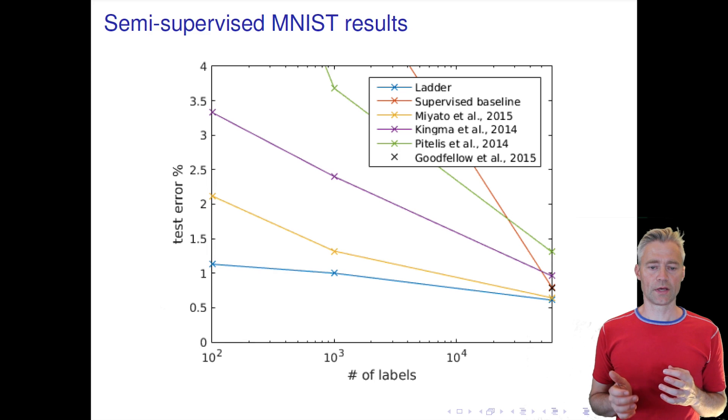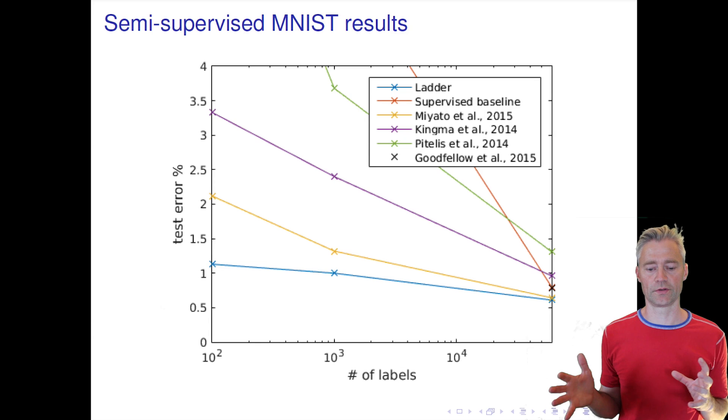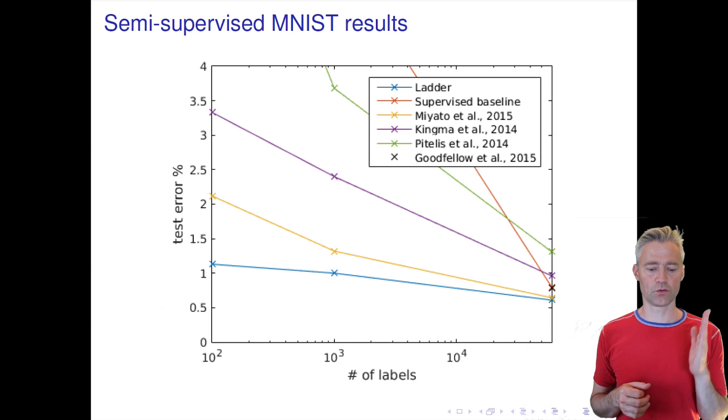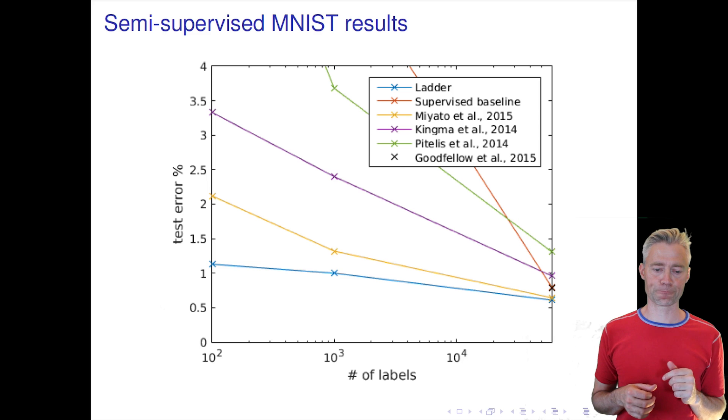So semi-supervised learning has made a lot of progress in the recent years. This curve you should be a little bit careful to read - now we are talking about unsupervised MNIST points so we have all in all 60,000 input points but here we vary the number of labeled points we have for these 60,000. So we can see here we start out with 100 labeled points.